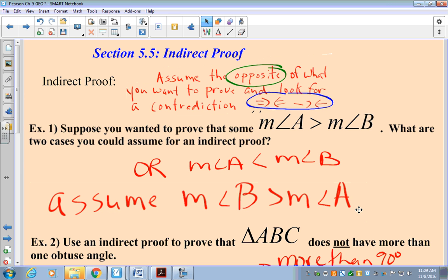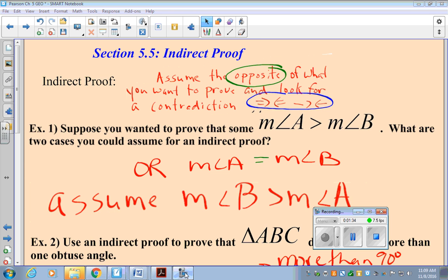The first case is the measure of angle A is smaller than the measure of angle B, or the measure of angle A equals the measure of angle B. So the opposite of measure of angle A greater than measure of angle B is either they're equal or B is bigger than A.